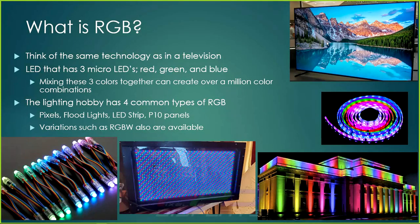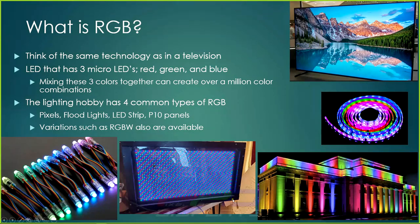The lighting hobby has four most common types of RGB appliances. I would call them props: pixels — which you can see in the bottom left — flood lights which push light onto a building flooding it, LED strips which make very nice straight lines, and P10 panels. This is a picture of one of my P10 panels — it's a tune-to sign.